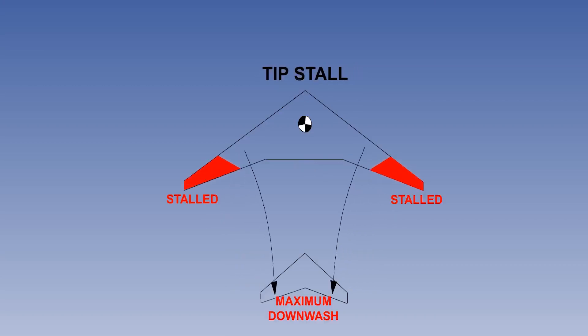As soon as a swept wing begins to stall both the forward CP movement and the increased downwash push at the tail plane causes the nose to rise rapidly further increasing the angle of attack.